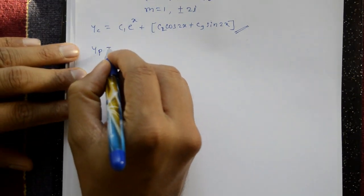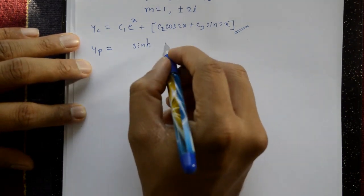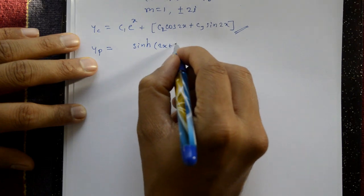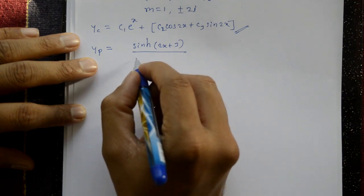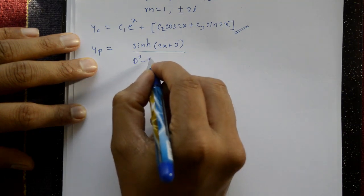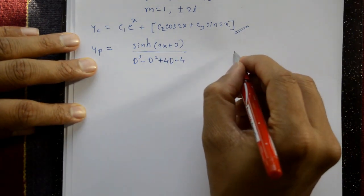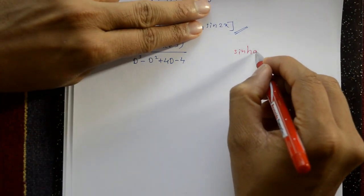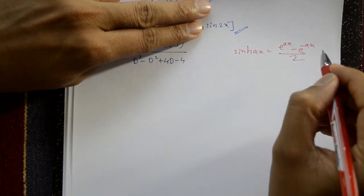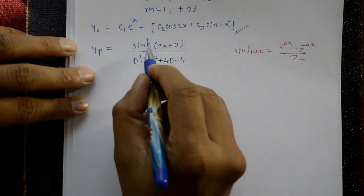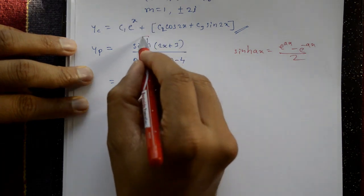Now the particular integral yp = sinh(2x + 3) / f(D), where f(D) = D³ - D² + 4D - 4. Using the standard formula: sinh(u) = (e^u - e^(-u)) / 2.